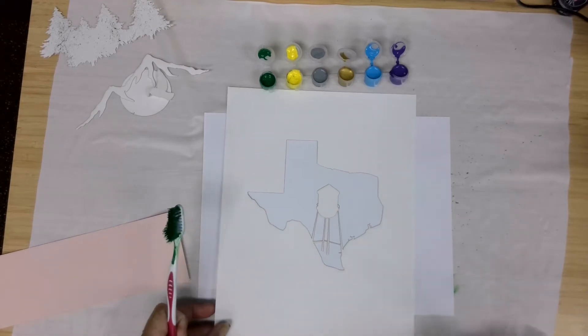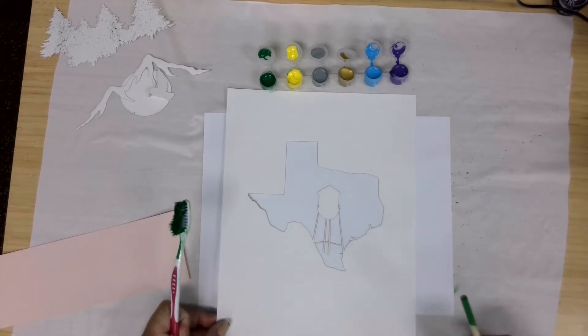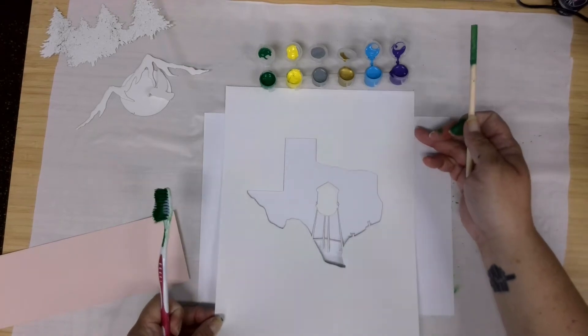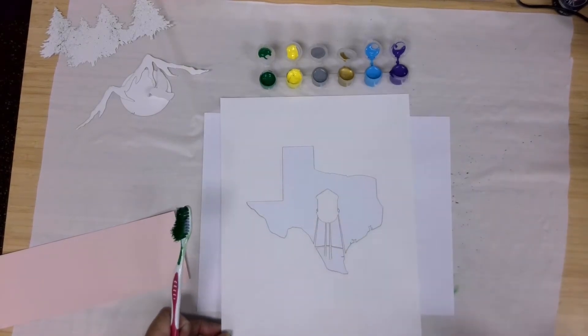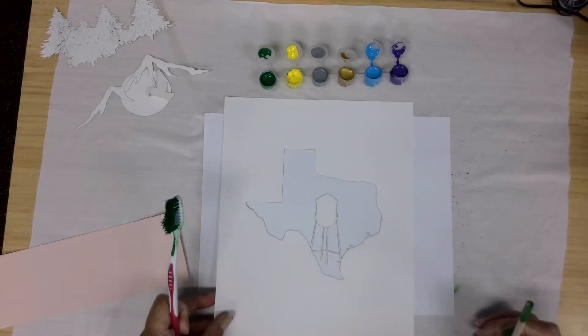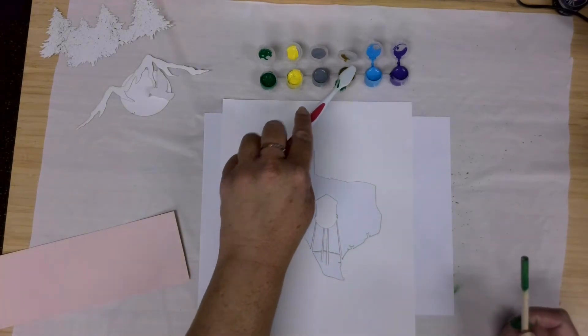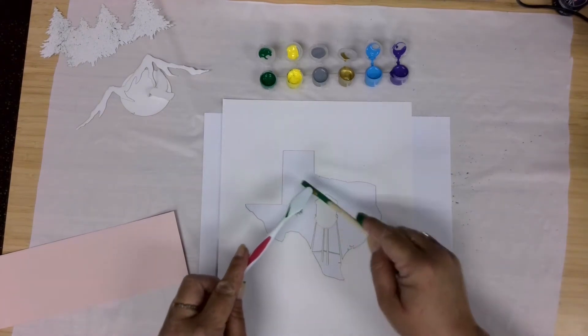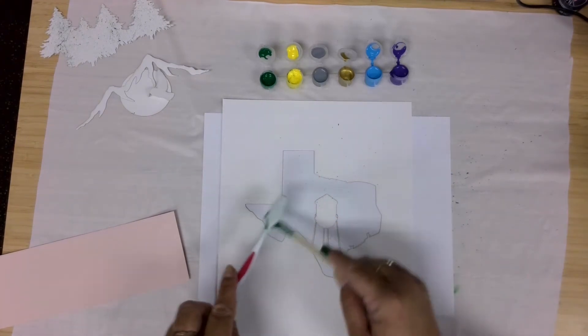So for this stencil you want to make sure that you're recognizing where it's laying on your canvas so that you get it kind of centered for you. And this one we can just have, you know, Texas, we can just do any colors.